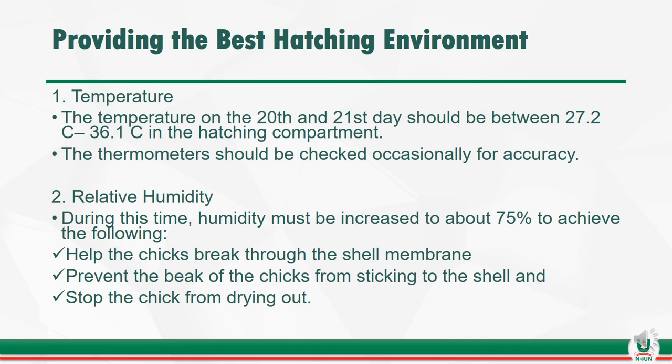To provide the best hatching environment, consider the following: (1) Temperature — on the 18th and 21st day of hatching, temperature in the hatching compartment should be between 27.2°C and 36.1°C. The thermometer should be checked occasionally for accuracy. (2) Relative humidity — during the 18th to 21st day of hatching, humidity must be increased to about 75% to help chicks break through the shell membrane, prevent the beak from sticking to the shell, and stop the chick from drying out.